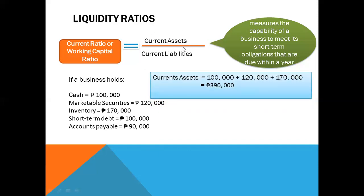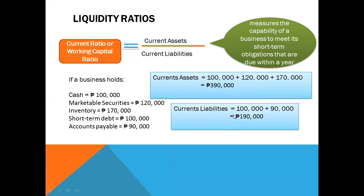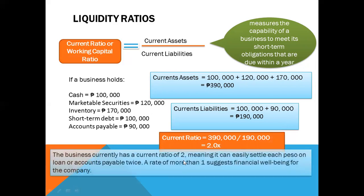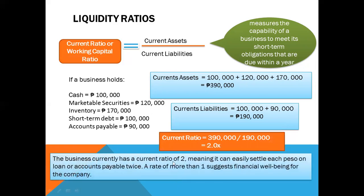current assets equal cash of $100,000 plus marketable securities of $120,000 plus inventory of $170,000, which equals $390,000. Current liabilities: short-term debt of $100,000 plus accounts payable of $90,000, giving total current liabilities of $190,000. Thus the current ratio is 2.0x, meaning the business can settle each peso of loan or accounts payable twice. A rate of more than 1 suggests financial well-being for the company.